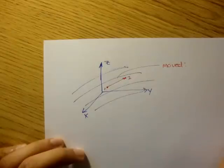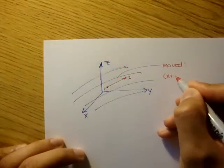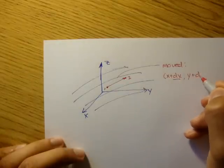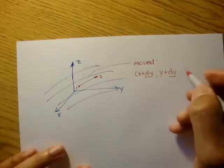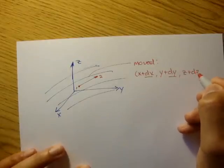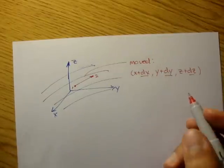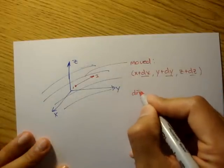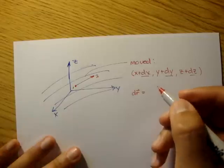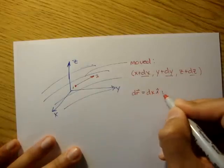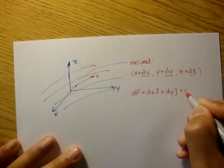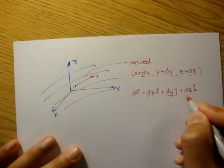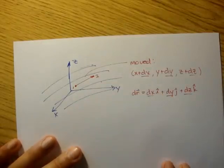So we can say the particle moved x plus dx a little bit in the x direction, y plus dy a little bit in the y direction, and z plus dz a little bit in the z direction. We can model this small change as dr, where dr is equal to dx·i plus dy·j plus dz·k — it moved a little bit in x, a little in y, a little in z, from position one to two.